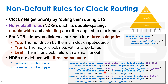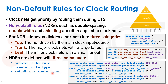Finally, we tell the tool which route types apply to which clock net categories using set_db: cts_route_type_top uses top_rule, trunk uses trunk_rule, and leaf uses leaf_rule. That is how we set non-default rules on our clock nets. You can also apply this to non-clock nets, but in that case you wouldn't use cts_route_type.